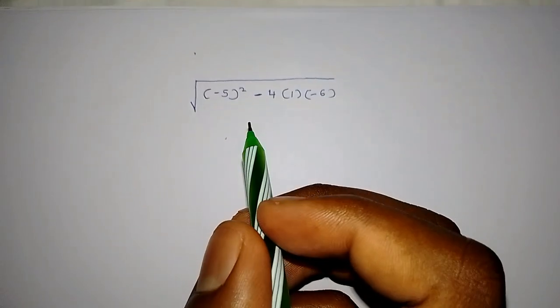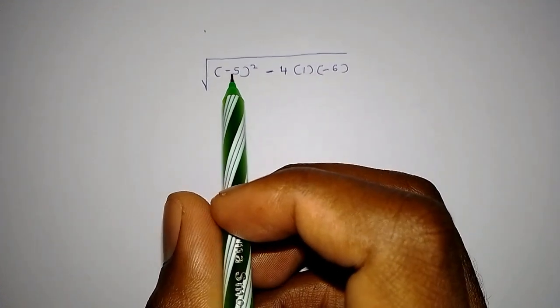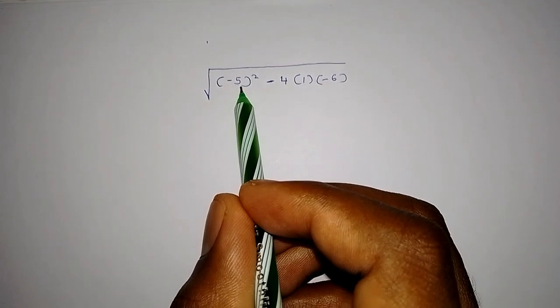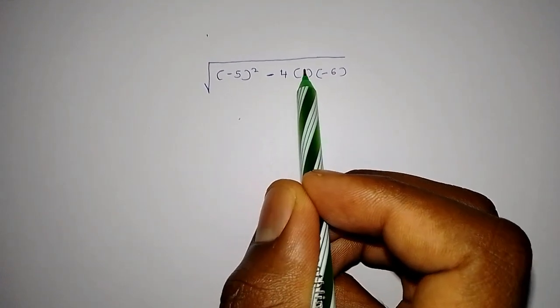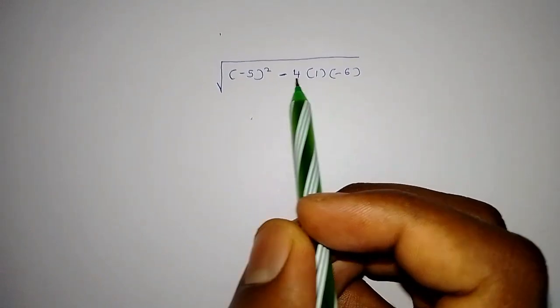Welcome to my channel where learning is nothing but fun. We are given a question here where we are told to find the square root of negative 5 squared minus 4 into 1 multiply by negative 6.